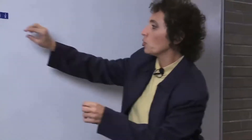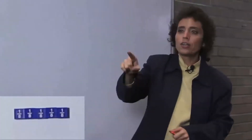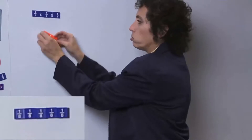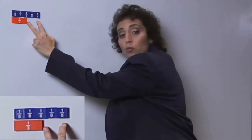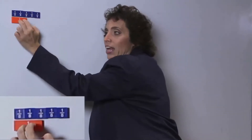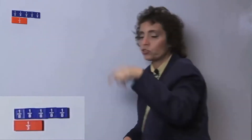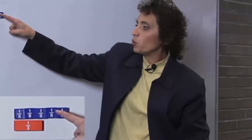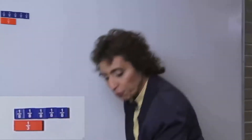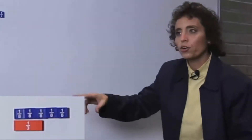Let's look at this question. Mr. Miser began his trip. The gas gauge read 5 eighths full — that's how full it is now. When he returned from the trip, it read 1 third full. Obviously he used this much gas. We want to know the difference between this and this — whatever this difference is, that's what he used up. So we want the difference between 5 eighths and 1 third, which means we're going to subtract. We're going to take 5 eighths minus 1 third.